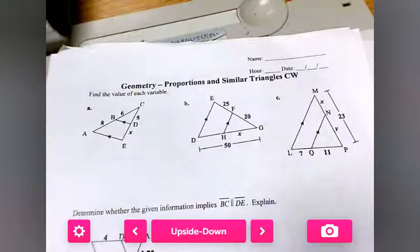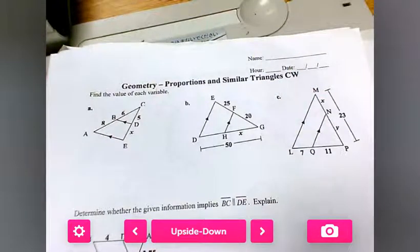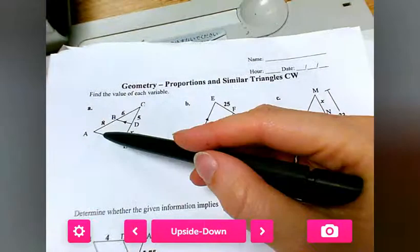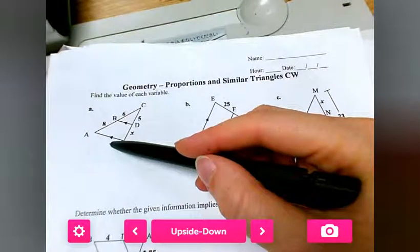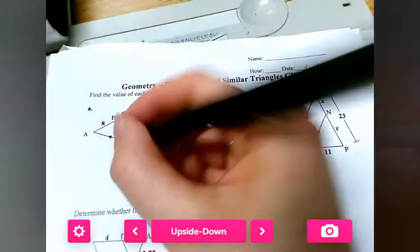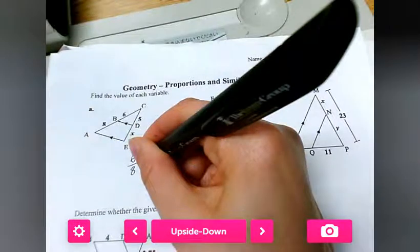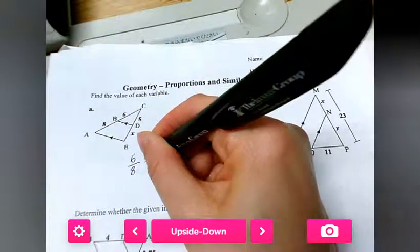Looking at proportions and similar triangles classwork. We want to find out if we are given a triangle which is separated by two parallel lines. These sides are proportional to each other, so six over eight does equal five over x.